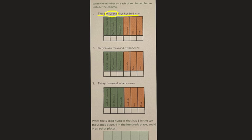Number two says sixty-seven thousand twenty-one. Remember, circle that thousand. And look at what comes before it and after it. Number three says thirty thousand ninety-seven.